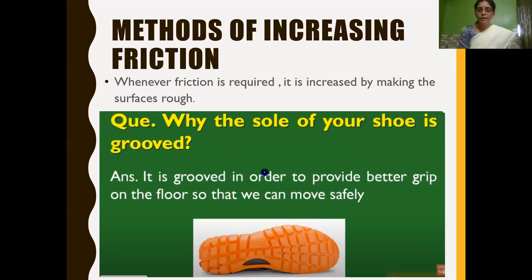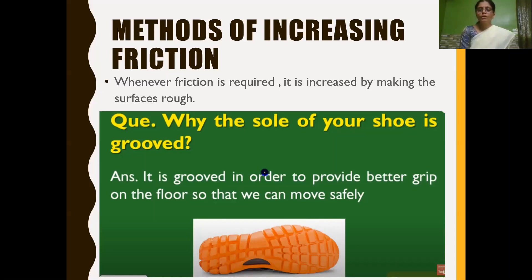For example, the sole of our shoes is grooved — as you can see in the picture. The sole of shoes is grooved in order to provide a better grip on the floor so that we can move safely. If the surface is grooved, it becomes rough, increasing the contact between the sole of our shoes and the floor. Rough surfaces have interlocking ridges and grooves which cause friction, so that we can move safely.